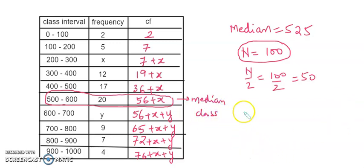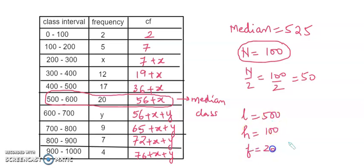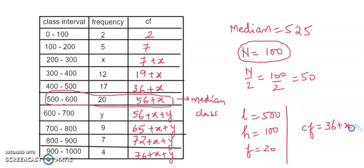The lower limit is 500 and the class length is 100. Frequency is 20 and the cumulative frequency is 36 plus x.